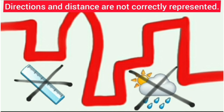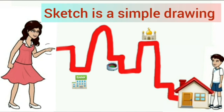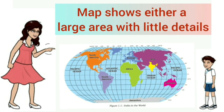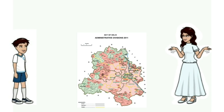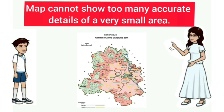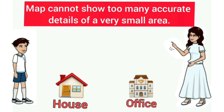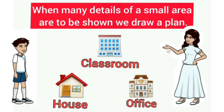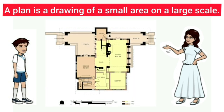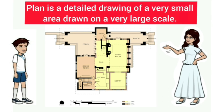A map shows either a large area with little details or a small area in detail. Although a map shows the detailed features of an area, it cannot show too many accurate details of a very small area — like a house, an office building, or a classroom. Therefore, when many details of a small area are to be shown, we draw a plan. A plan is a drawing of a small area on a large scale, giving us a lot of information. Thus, a plan is a detailed drawing of a very small area drawn on a very large scale.